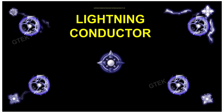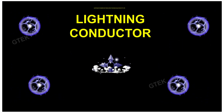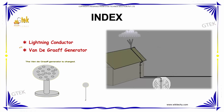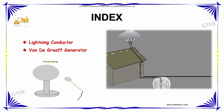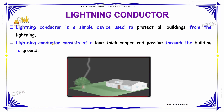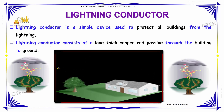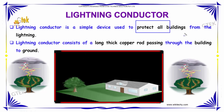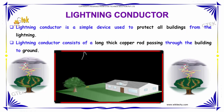Let us discuss about the lightning conductor. We will be discussing about the introduction of the lightning conductor and the Van de Graaff generator. The lightning conductor is considered to be a simple device which is used in order to protect buildings from the lightning effect, as you can see here.